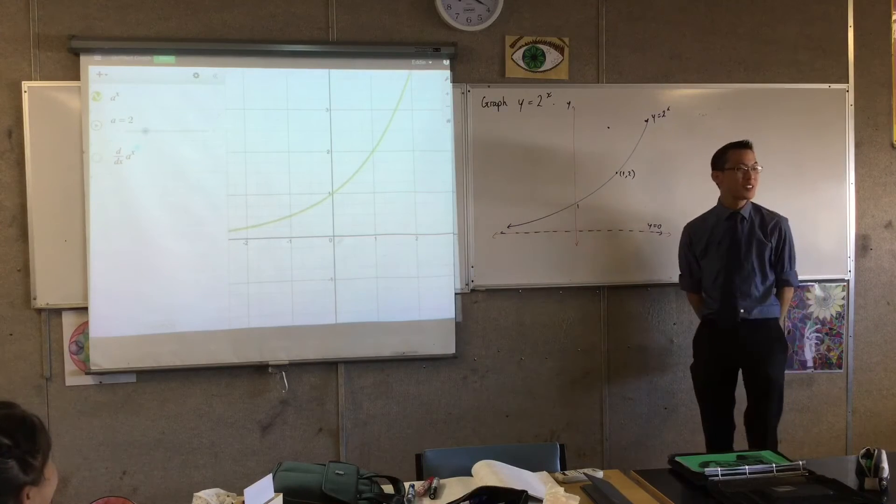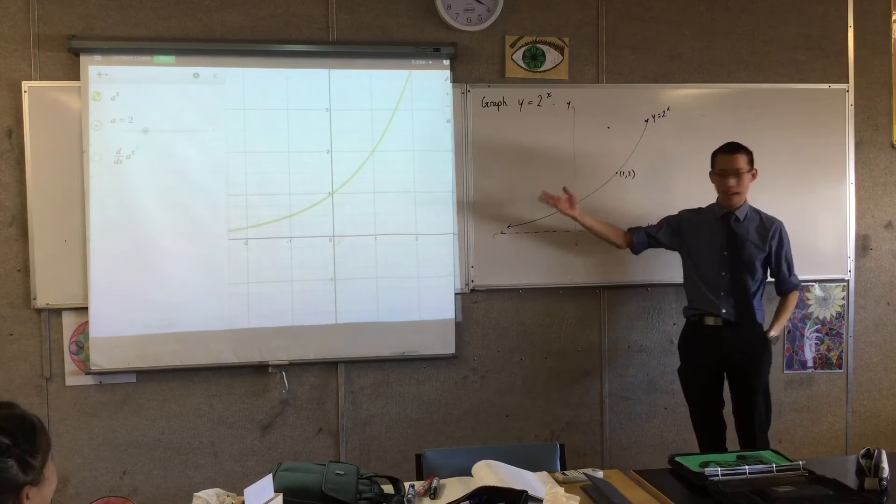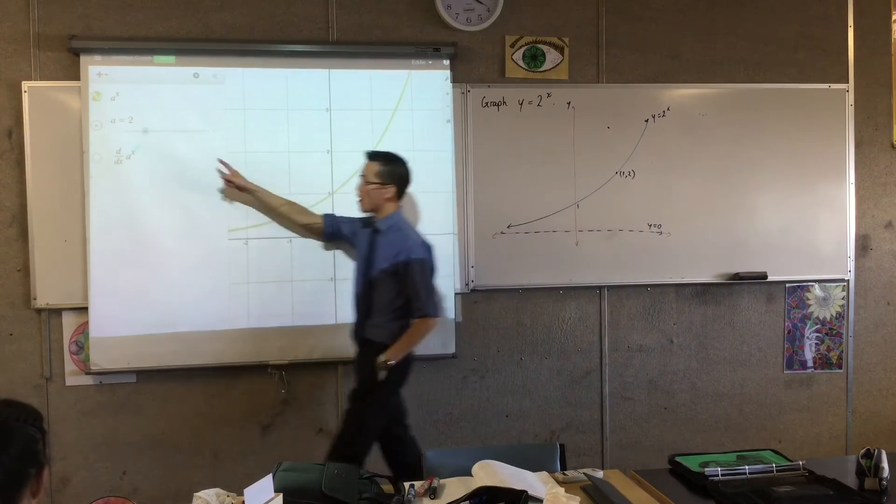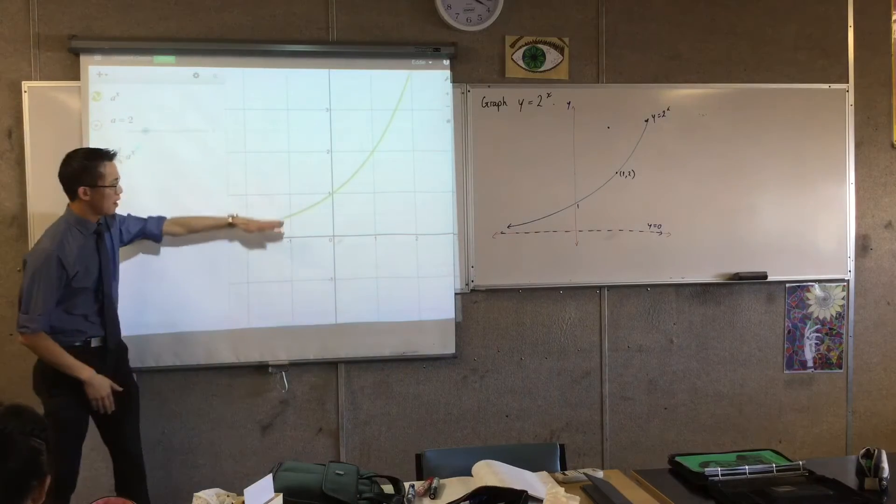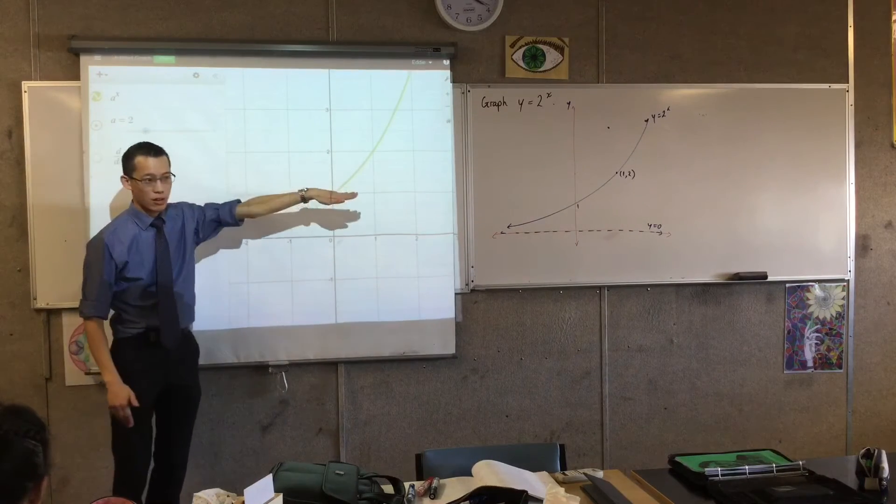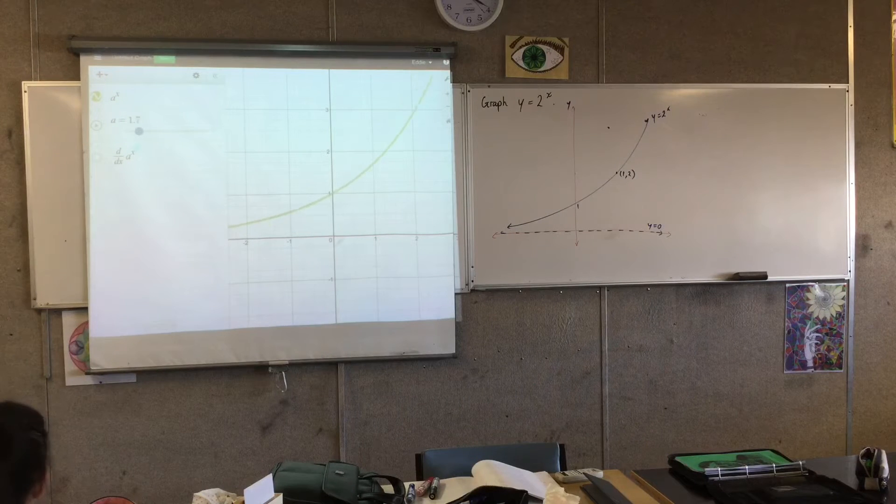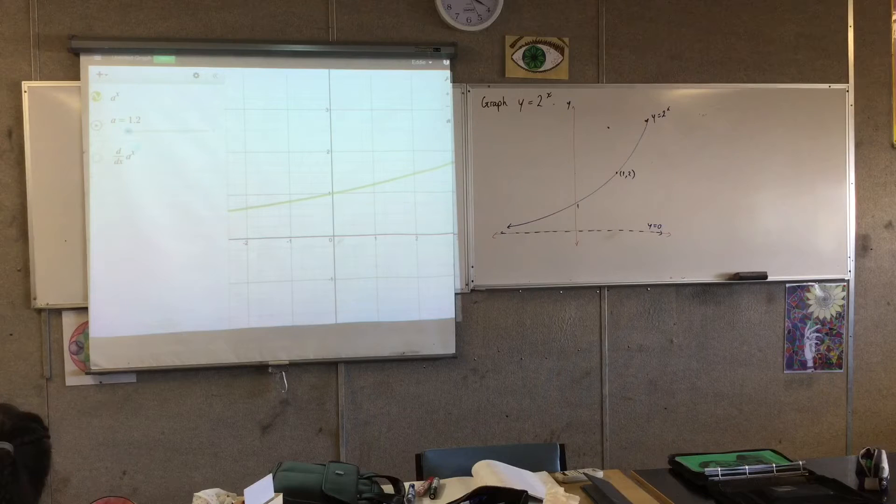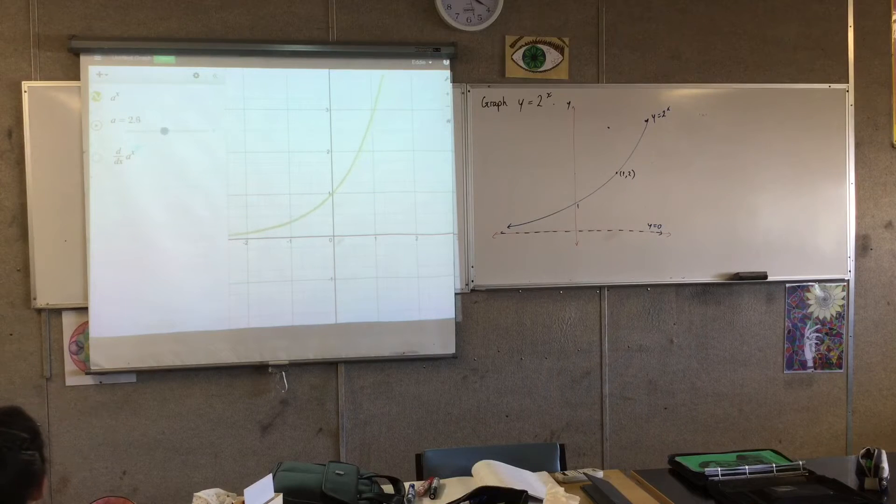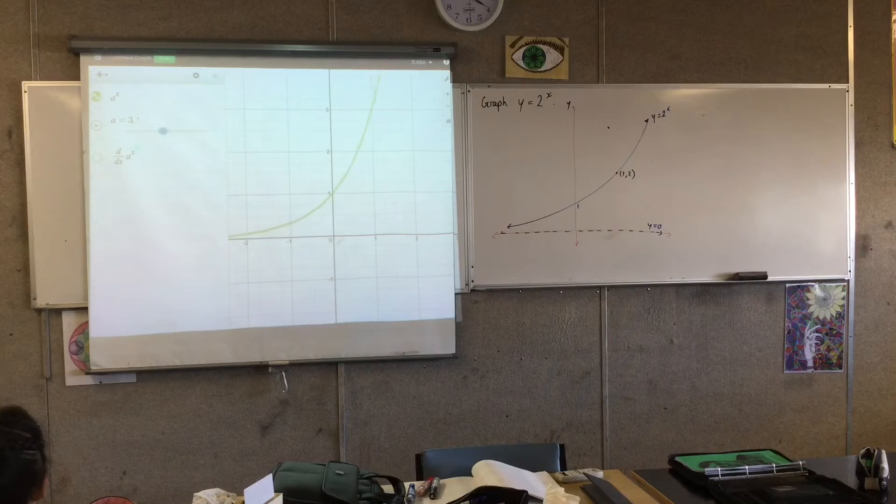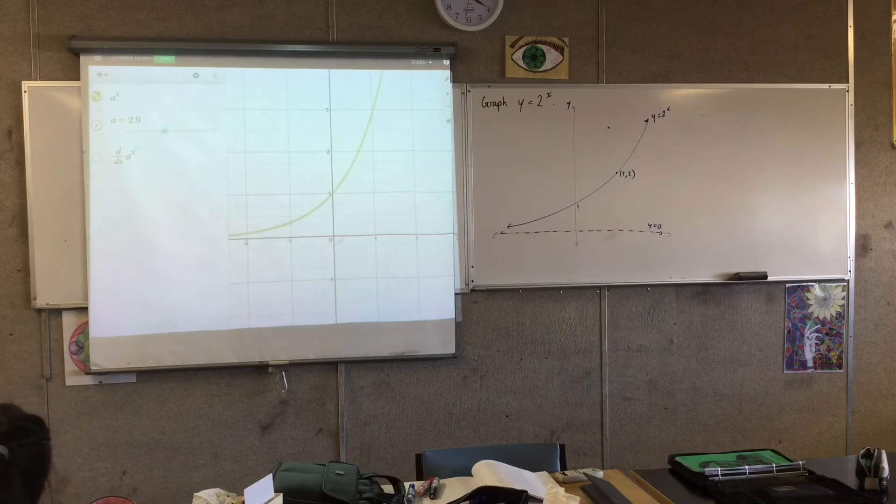But as soon as we change things, and I encourage you to actually put this into Desmos yourself so you can muck about with it, and not just watch me muck about with it. As soon as I change values of a, things start to happen. Let's just get up to two. So there's our two to the x, and you can see if I muck around with a, we're going from a lower value, which is right straight across.